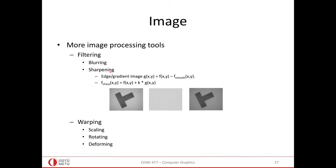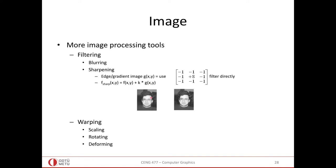Another filter is sharpening. You get an edge image G by subtracting the smoothed version from the original image. You then amplify the edges by a factor k and add them back to the original image, which sharpens that part. The edges contribute even more because you first detect them, amplify them by k, and add them back to the scene.